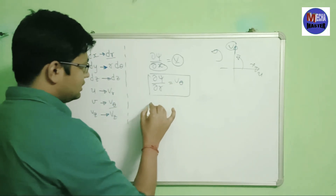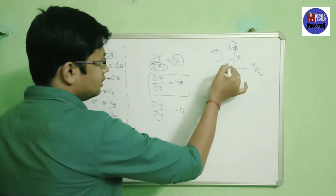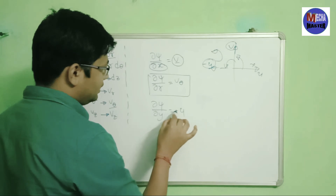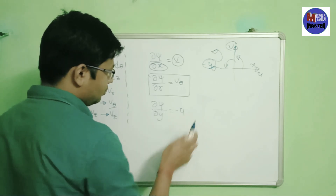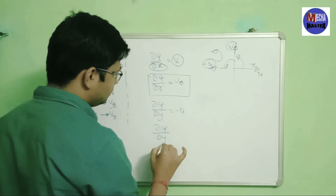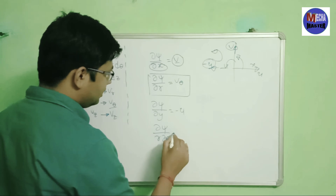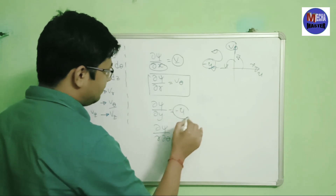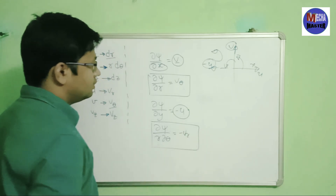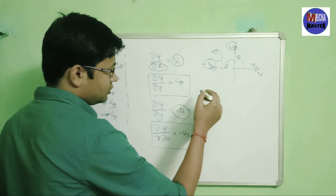Another stream function equation is del ψ upon del y equals to minus u for the anticlockwise direction. To convert: on the place of del y write r dθ, and on the place of u write vr. So the polar form is del ψ upon r dθ equals to minus vr. This has been changed.